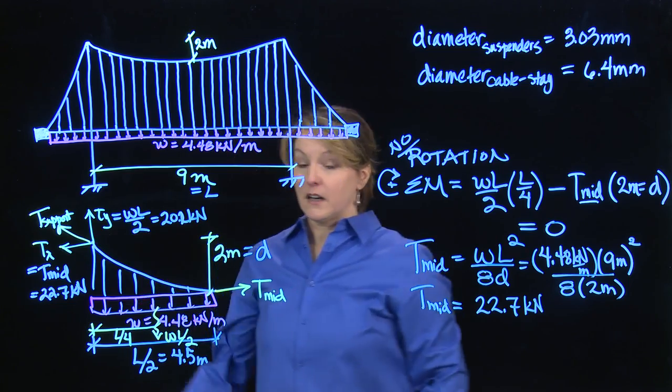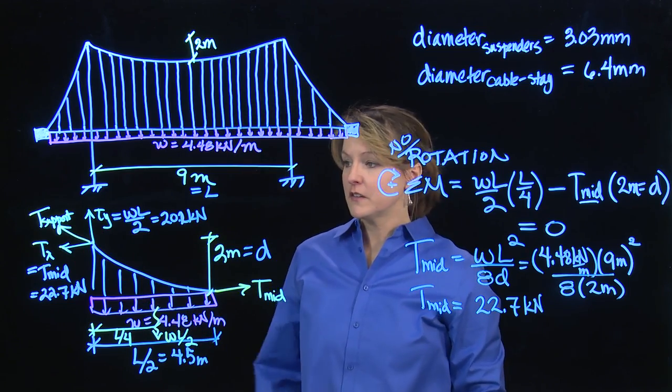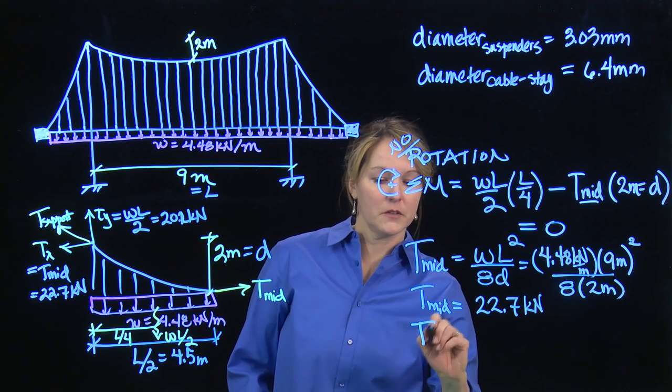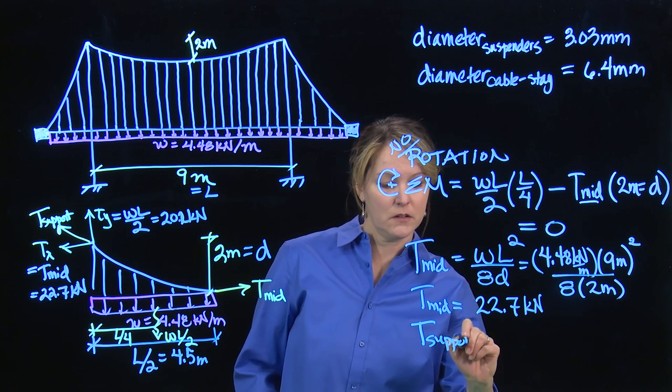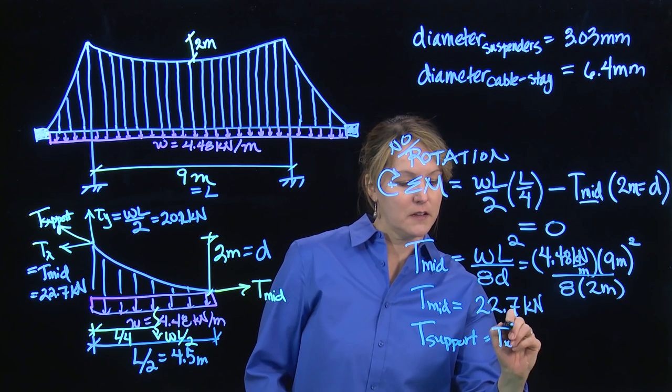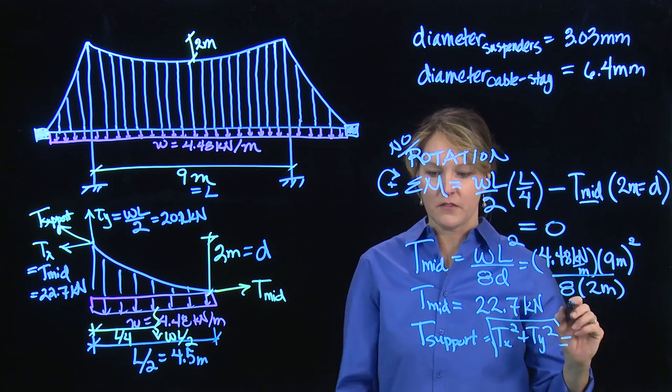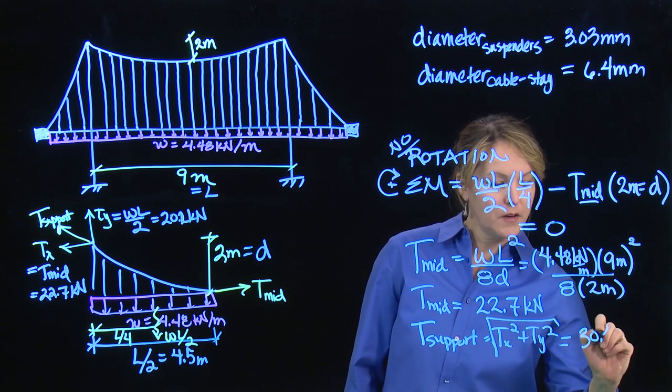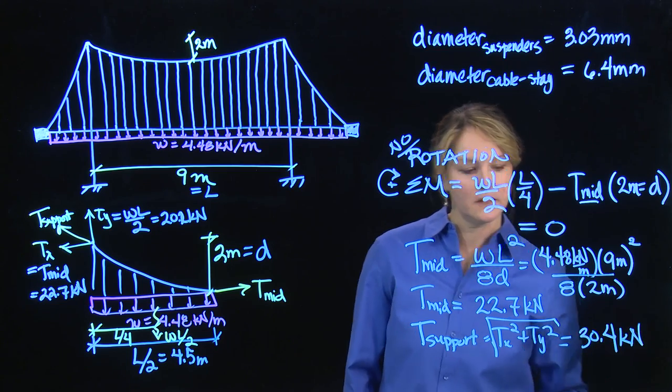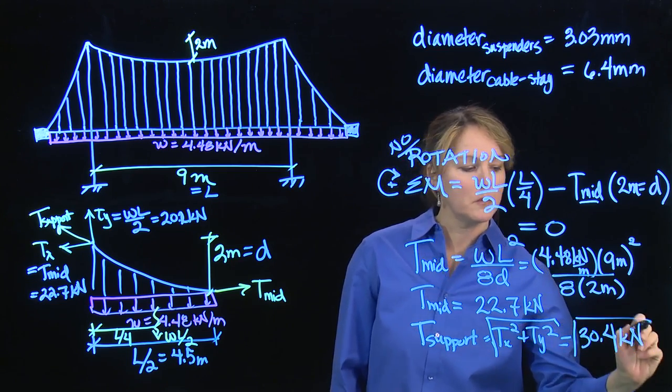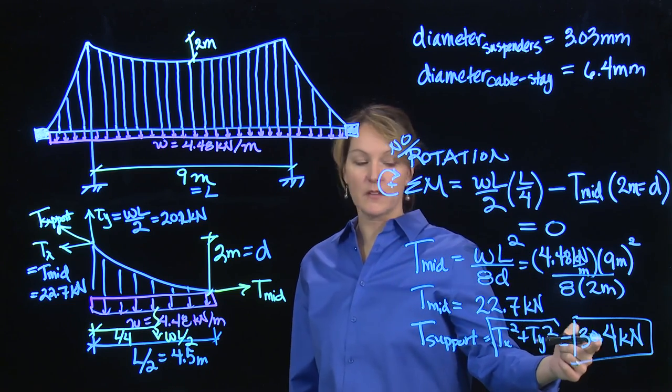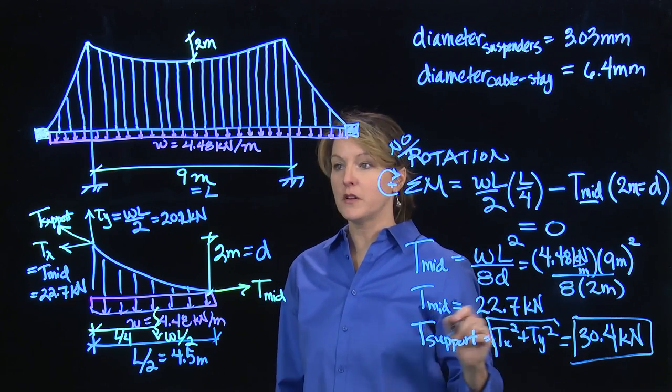That's the vertical and horizontal component of the tension force at the support. If I want the actual tension force at the support, I would take T_x squared plus T_y squared, square root. And that value ends up being 30.4 kilonewtons. This is the maximum tension force in the main cable. So that's what I would design for. I designed for the 30.4.